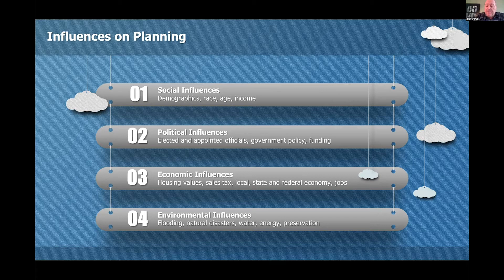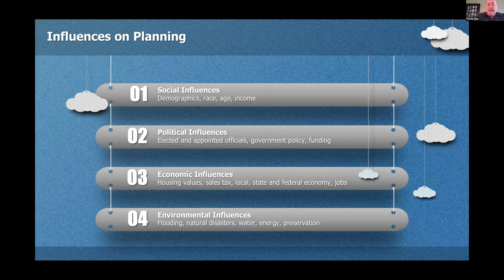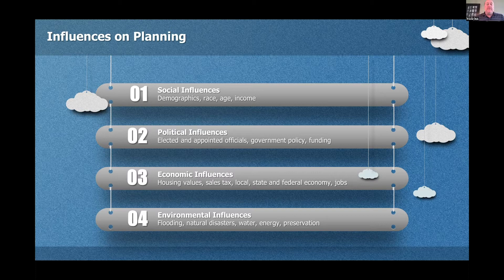This slide shows us the influences on our profession. This is something that the APA in their last refresh has really started to put some focus on. They essentially want us to know as planners that we don't make decisions in a bubble — we're impacted by a lot of different influences. We've listed here four of the biggest ones. Think about the social influences, the political influences — how do your elected and appointed officials help shape your planning decisions? Think about economic influences, which before and after the pandemic are huge. And lastly, be aware of the natural environment and how your planning decisions take into account current conditions or impact the environment moving forward.